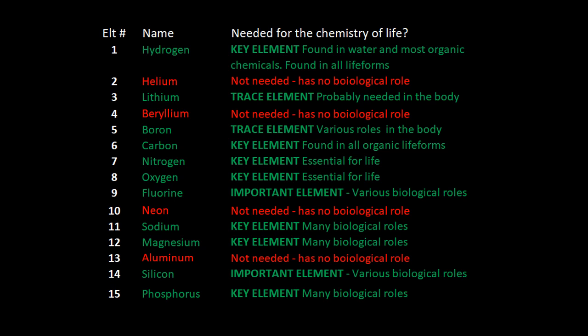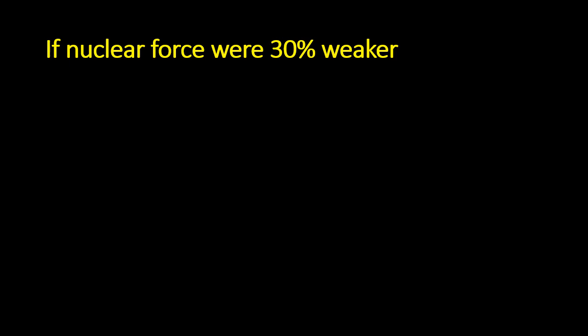The heaviest stable element in such a universe would be Boron, and all the key elements such as Carbon, Nitrogen, Oxygen, Fluorine, Sodium, Magnesium, Silicon, and Phosphorus would be unstable.